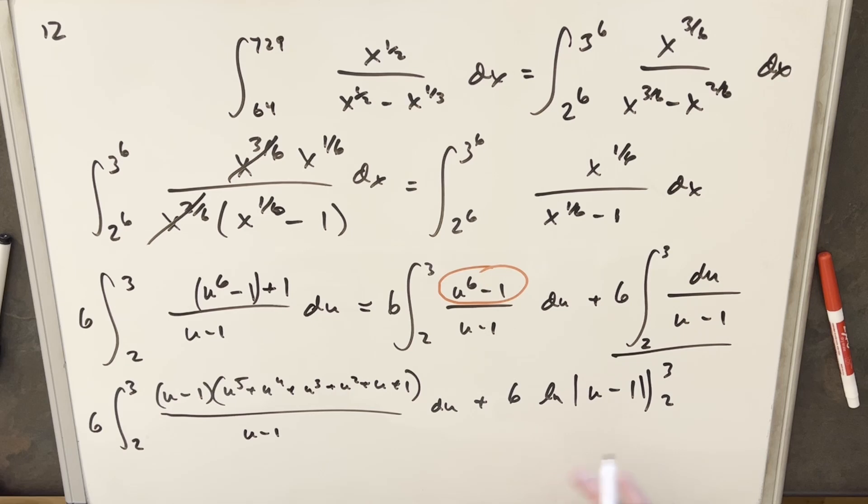Let's finish this piece off because this is easy. This is going to be 6 ln. 3 minus 1 is 2 so we're going to have ln of 2. When we plug 2 in we're going to have ln of 1 but that's just 0. So this piece is just 6 ln 2.